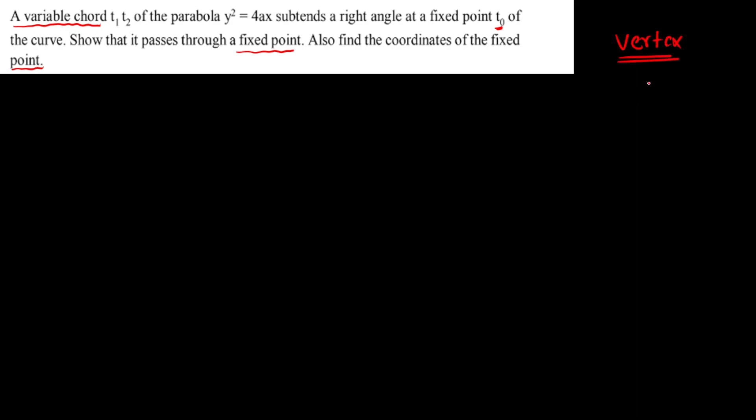Now, if instead of the fixed point t0, the chord is subtending the right angle at the vertex, I think all of us remember the result — and you should remember it: that fixed chord will pass through (4a, 0) if it subtends 90 degrees at the origin or vertex. There are two methods; method one is homogenization, and method two — which I'm going to show — is a very quick method.